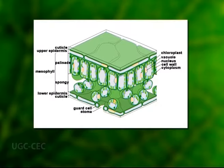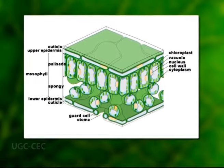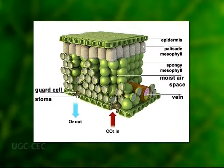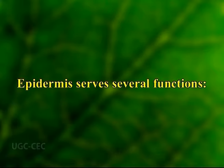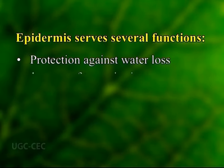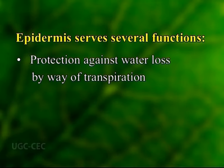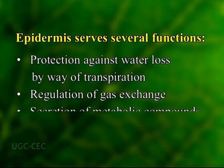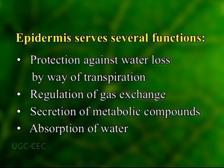The epidermis is the outer layer of cells covering the leaf. It forms the boundary separating the plant's inner cells from the external world. The epidermis serves several functions: protection against water loss by way of transpiration, regulation of gas exchange, secretion of metabolic compounds and, in some species, absorption of water.